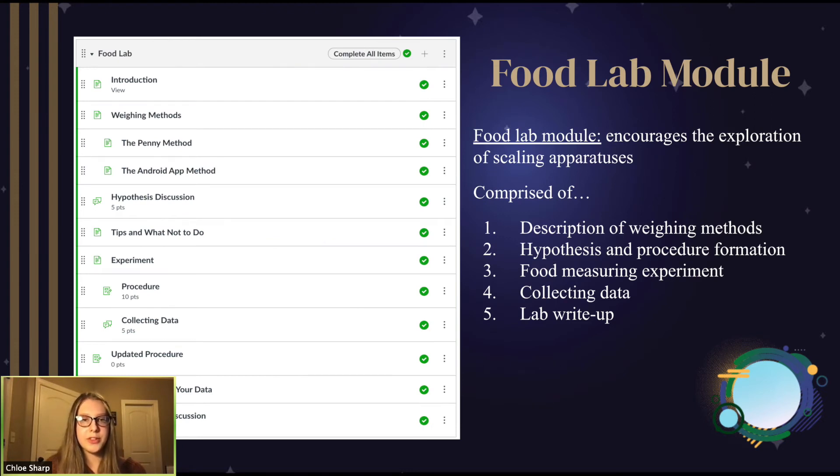The food lab teaches the difference between precision and accuracy in a hands-on setting, giving students a way to apply the statistical analysis skills that they learned in the previous module. In this lab, students worked in groups and were instructed to develop a procedure where they chose a food and drink to weigh using three different weighing methods to see which method gave the closest measurement to the advertised weight on the packaging.